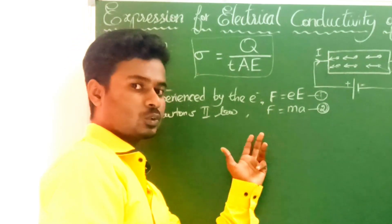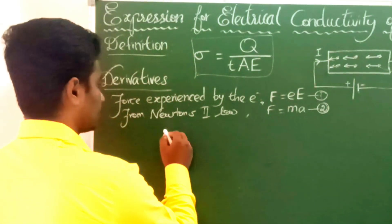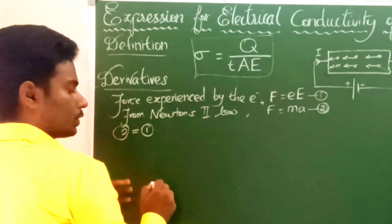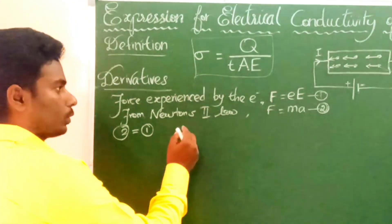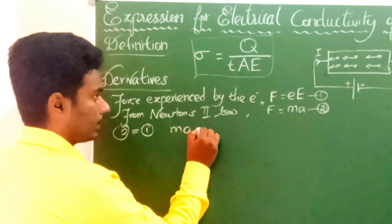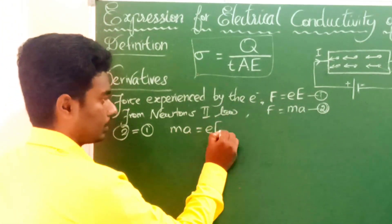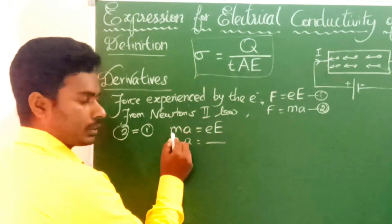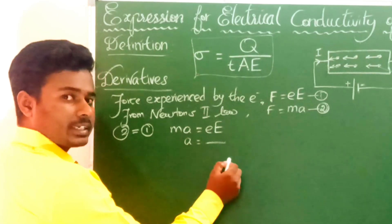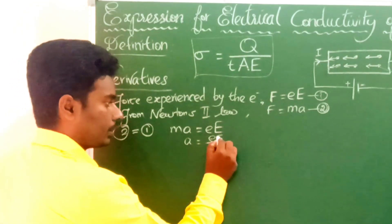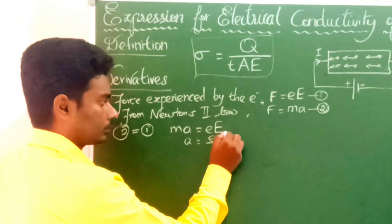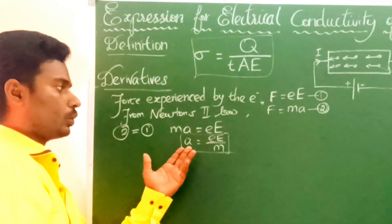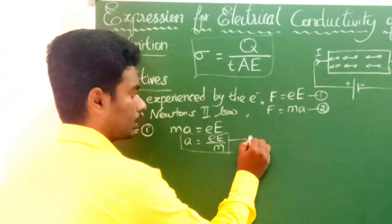Now we can equate the two equations — make the left-hand sides the same and set the right-hand sides equal. So mA equals eE. If we solve for A, we divide both sides by m, giving acceleration A equal to eE divided by m. This is equation number 3.